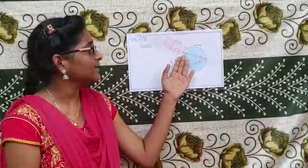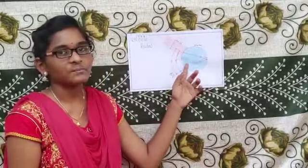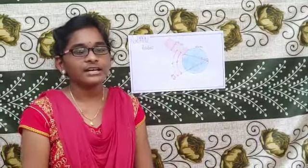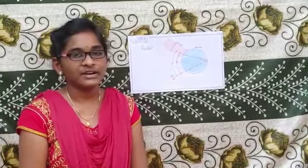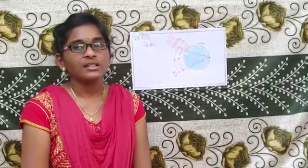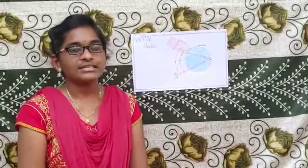When sunlight enters a spherical rain drop, it is reflected and dispersed. The different colors of light bend at different angles. After leaving the rain drop, the different colors of the rainbow reach our eye.